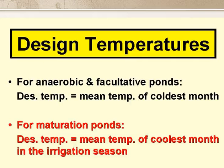A word on design temperatures. For anaerobic and facultative ponds, we use the mean temperature of the coldest month, as the ponds have to function properly at this lowest mean monthly temperature. With maturation ponds, it's less straightforward. If we were designing them for nitrogen removal, we'd use the mean temperature of the coldest month, but if we're designing them to produce an effluent suitable for agricultural reuse, then we'd use the mean temperature of the coldest month in the irrigation season.